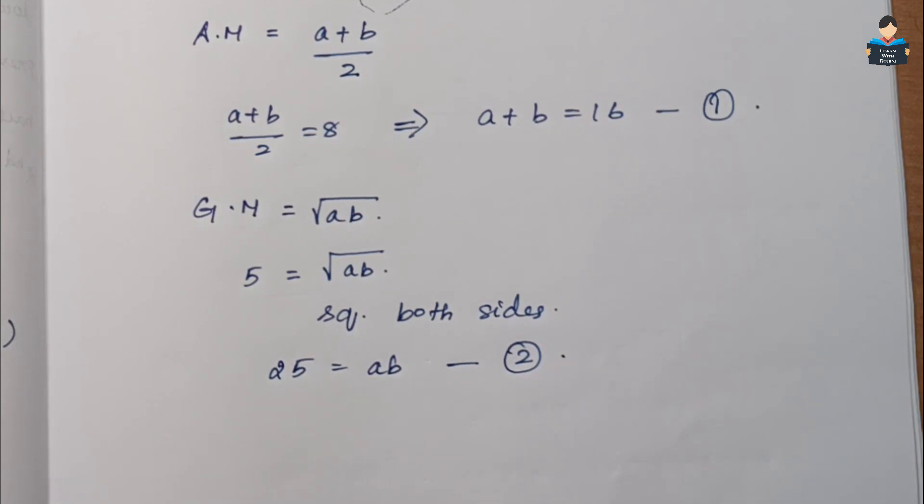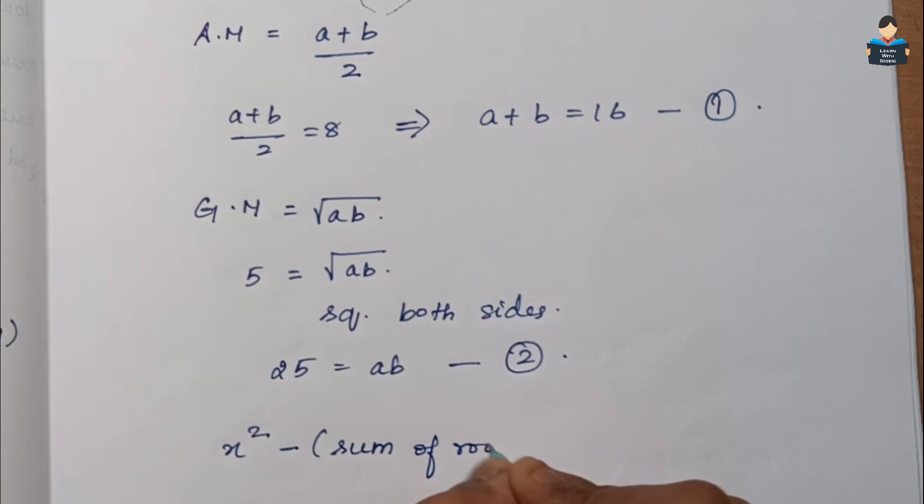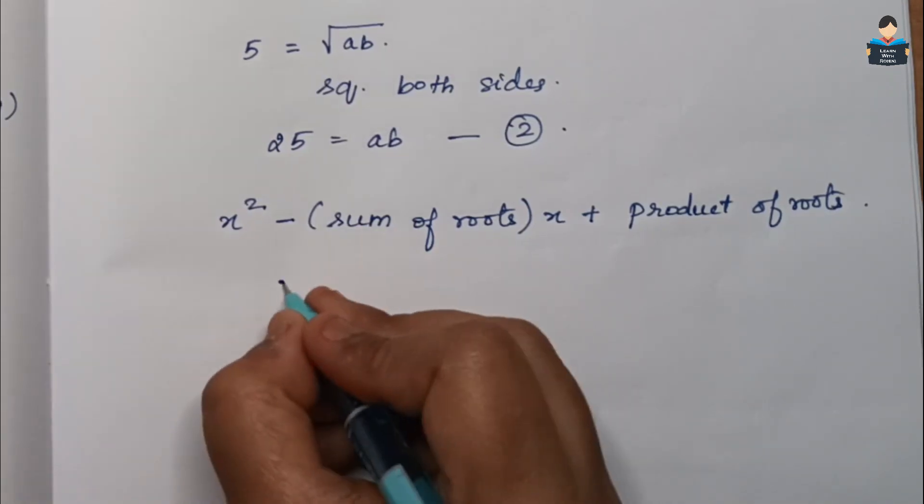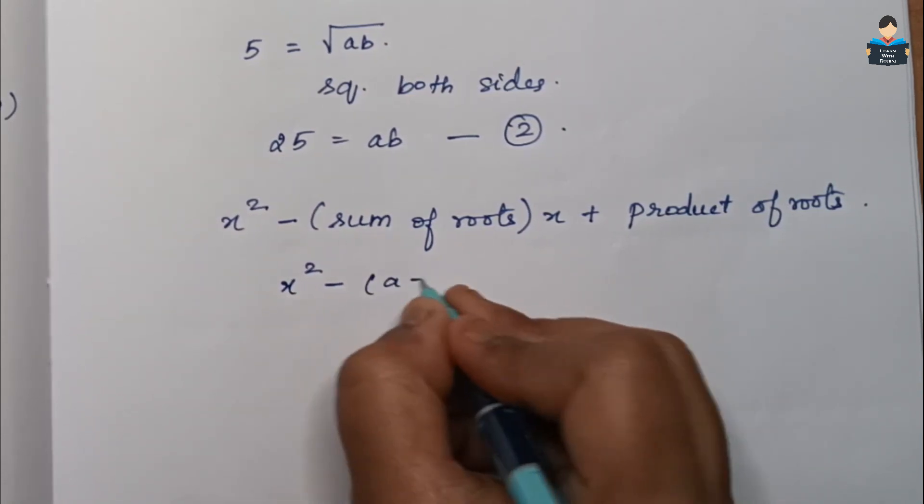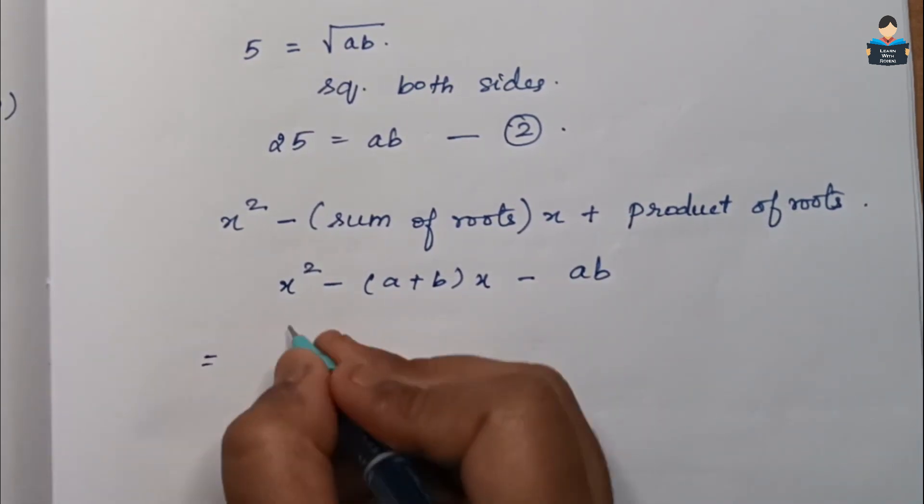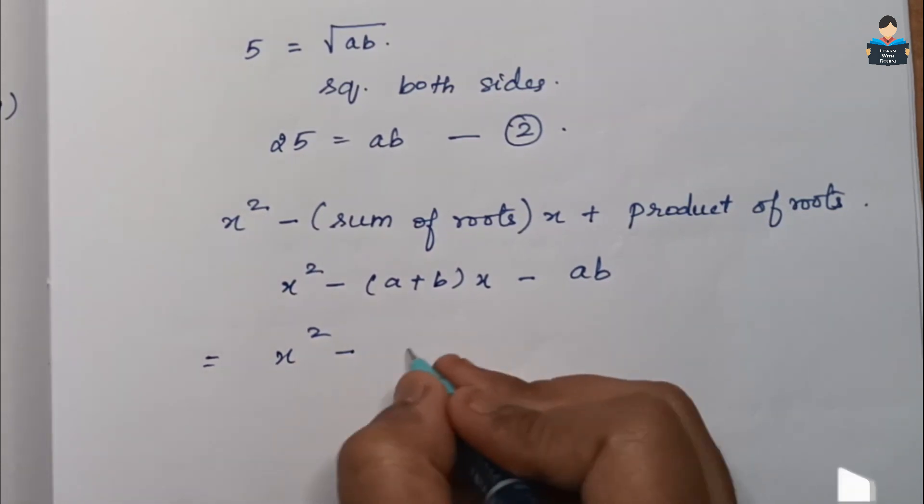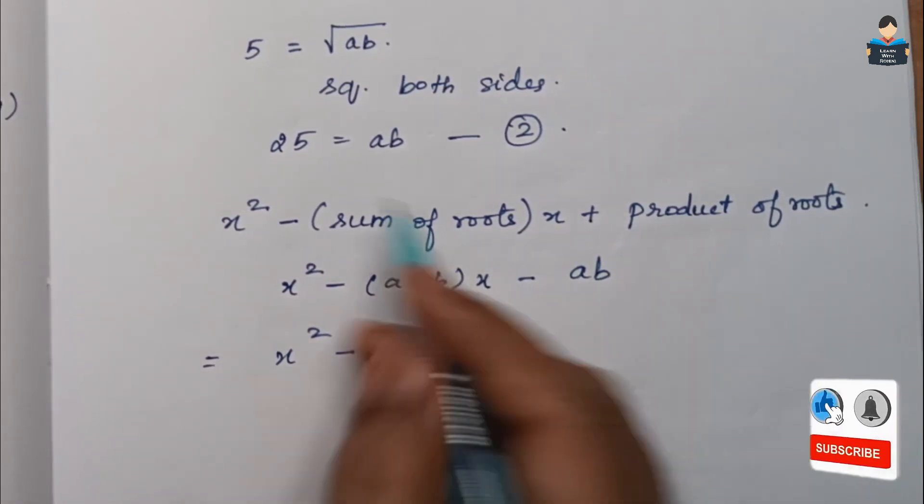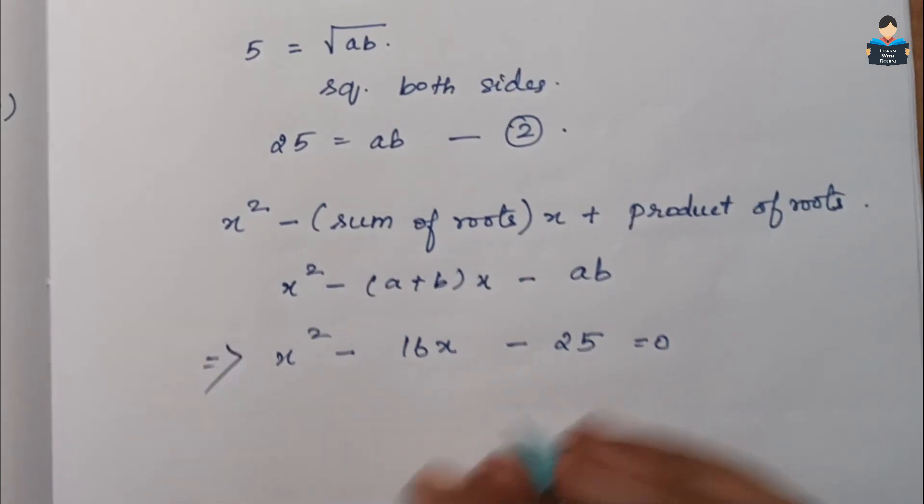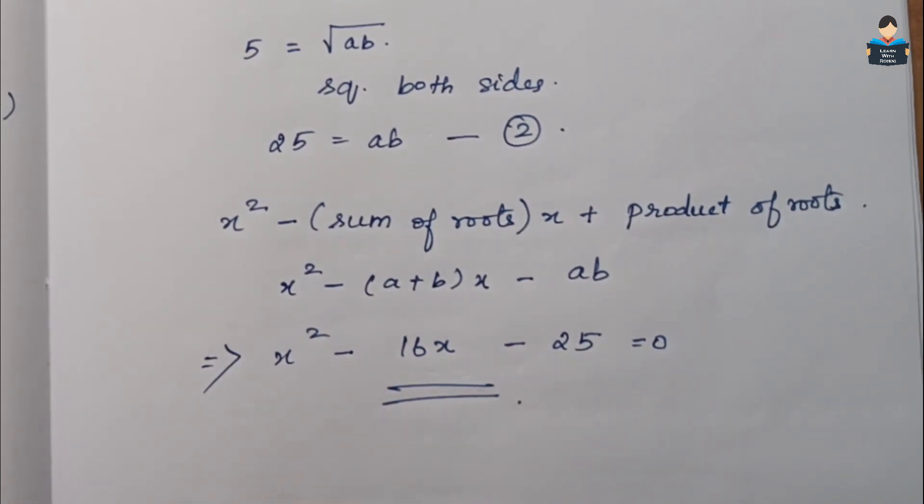The quadratic equation form formula is: x squared minus sum of roots times x plus product of roots. That is x squared minus (a plus b) times x plus (a times b). Substituting values: x squared minus 16x plus 25 equals 0. This is the final answer, the quadratic equation form.